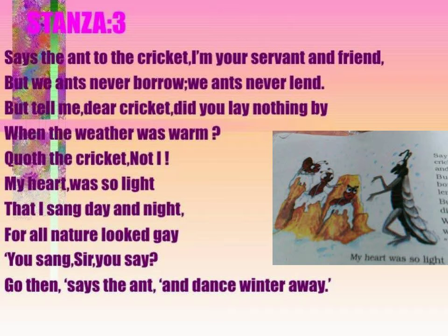In stanza 3, the ant says to the cricket: 'I am your servant and friend, but we ants never borrow and we ants never lend. But tell me, dear cricket, did you lay anything by when the weather was warm?' The cricket replies: 'Not I. My heart was so light that I sang day and night, for all nature looked gay.' The ant responds: 'You sang, sir, you say? Go then, and dance winter away.'